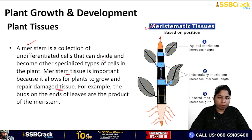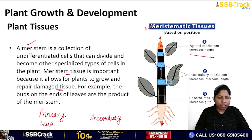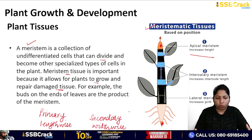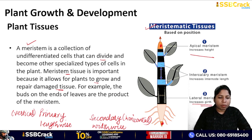Based on different positions, meristematic tissues are divided into three types: apical meristem, lateral meristem, and intercalary meristem. Apical meristem is present at the root tip and shoot tip, and it increases the height. There are two types of growth — primary growth, which increases height (lengthwise growth), and secondary growth, which is widthwise or horizontal growth — growth in thickness. So primary growth is vertical growth and secondary growth is horizontal.